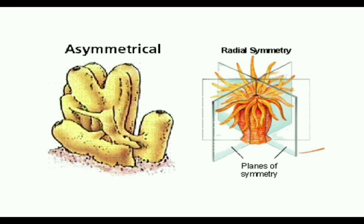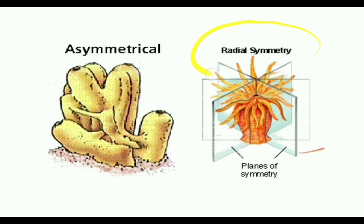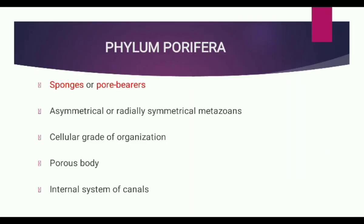Radial symmetry means the organism can be divided equally along a central axis. It is a basic body plan in which the organism can be divided into similar parts by passing a plane at any angle along the central axis. Phylum Porifera animals exhibit both asymmetry and radial symmetry, and have a cellular grade of organization with a porous body.